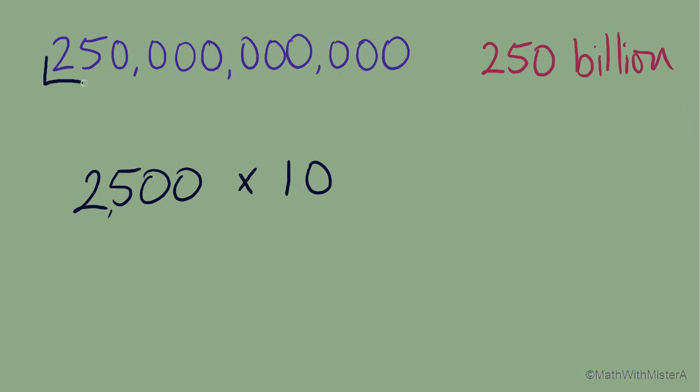So 2,500, I would see right here at the beginning of the number, 2,500. And then how many more multiplies by 10 do we need to build this number up to become 250 billion? And that's the same as how many extra decimal places do we need?